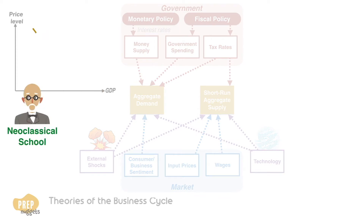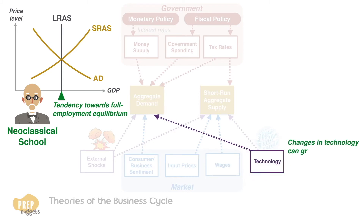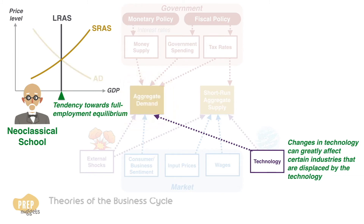Neoclassical economists believe that the economy has a strong tendency towards full employment equilibrium, so in theory, business cycles should not exist. However, they do acknowledge that changes in technology can greatly affect certain industries that are displaced by the technology, and that can cause limited short-term lowering of aggregate demand.